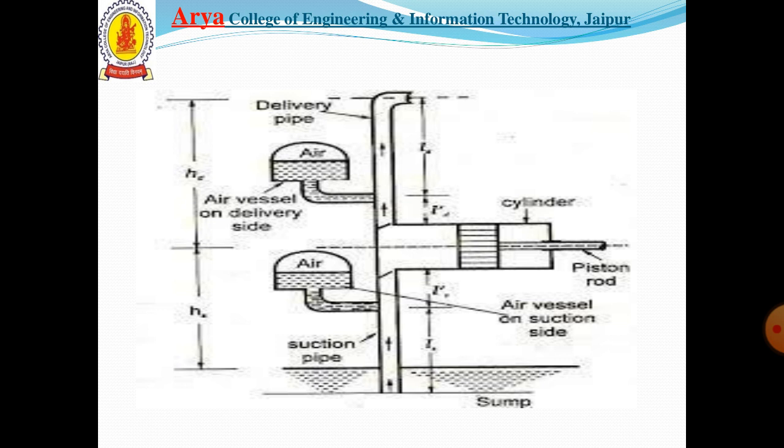When the liquid level in the air vessel rises, the air above is compressed, and this compressed air forces the liquid out as soon as the pressure in the pipe falls. The variation in air pressure may be reduced by increasing the capacity of the air vessels. The liquid in the delivery pipe beyond the air vessel is assumed to flow with a uniform velocity vd.